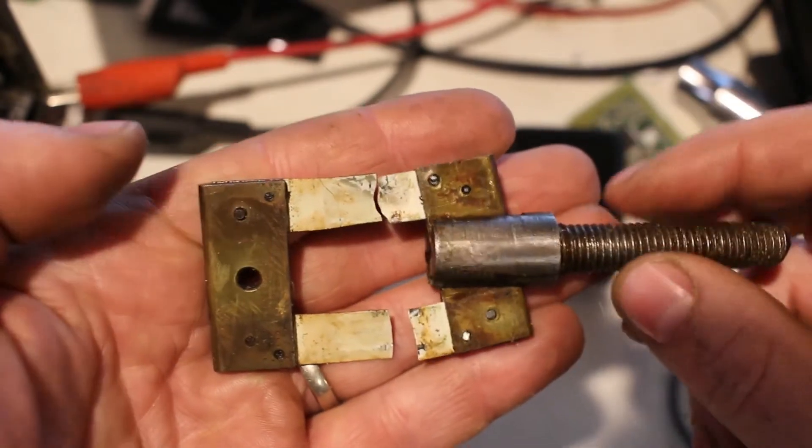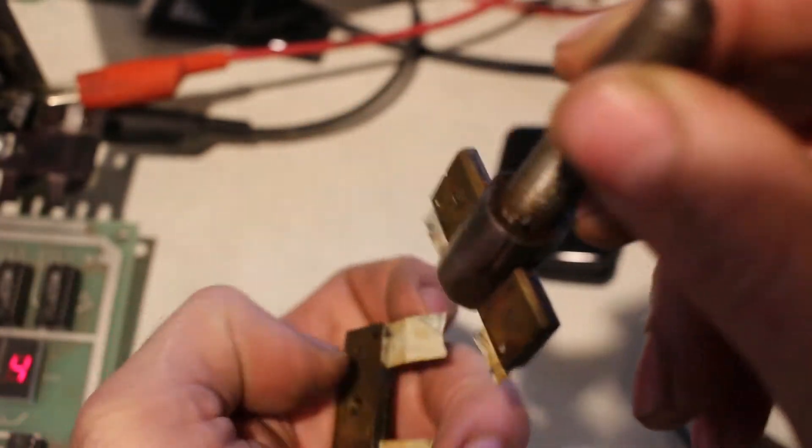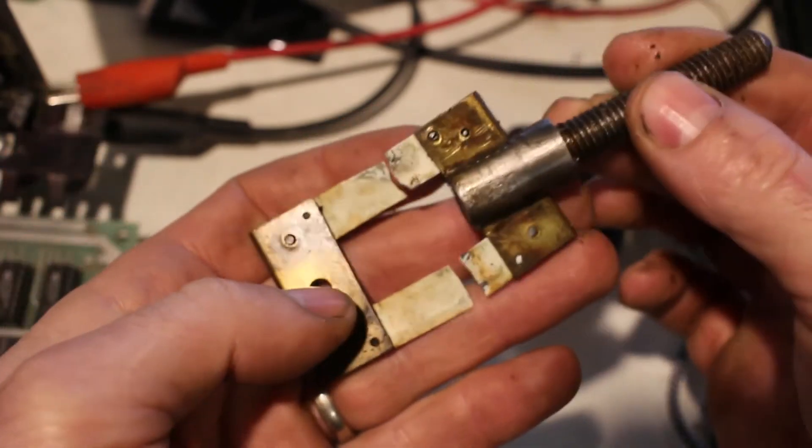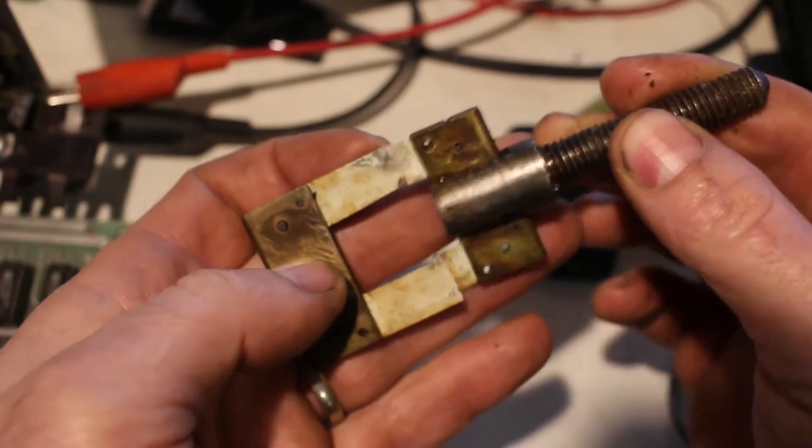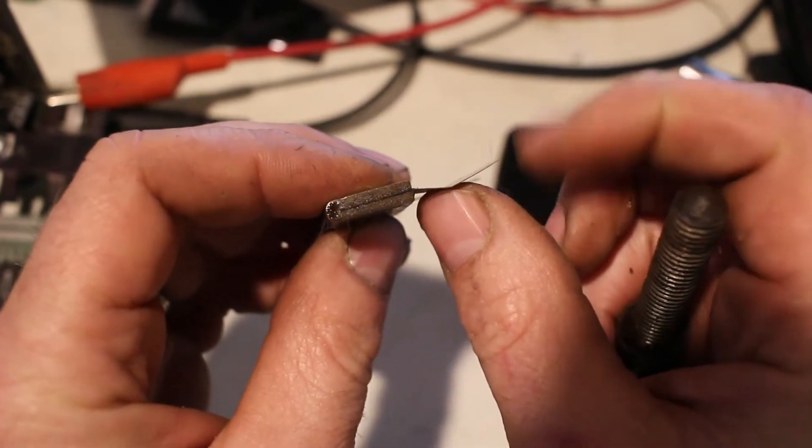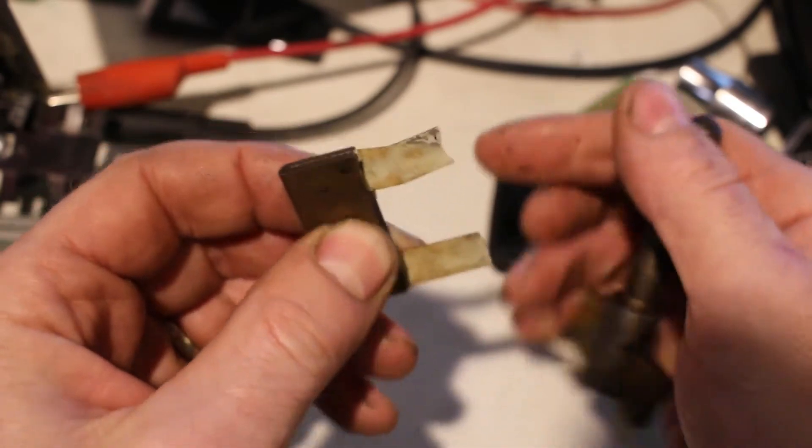This is the pendulum pivot. This hangs on the clock for adjustment. You can adjust it with a little screw, and then the pendulum hangs on here. The thin metal straps are what the clock pendulum actually hangs from.